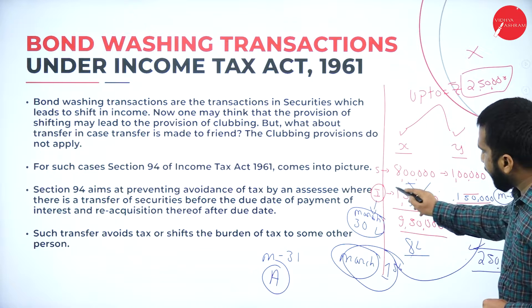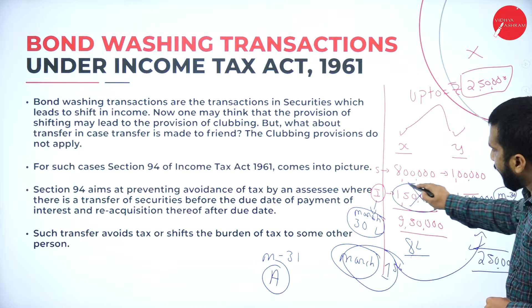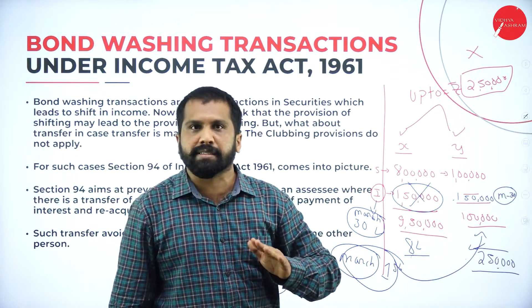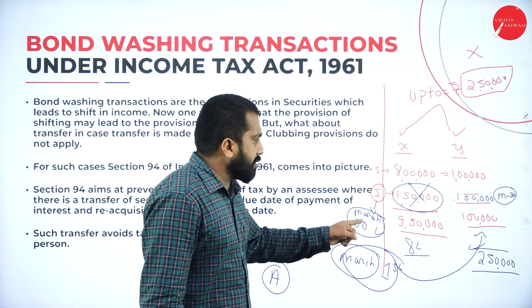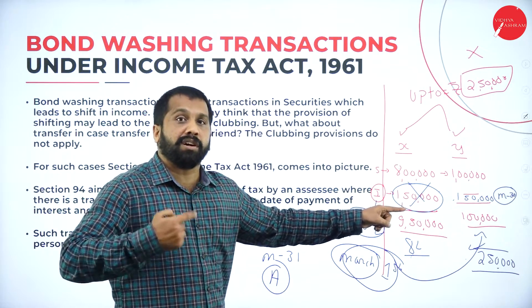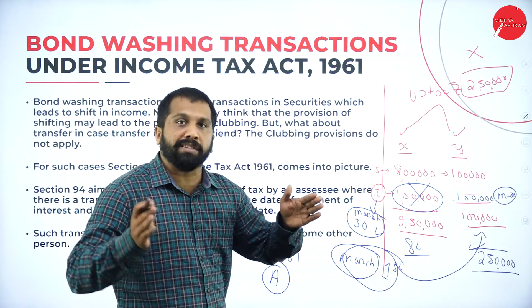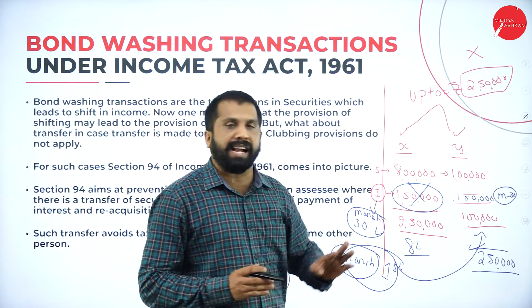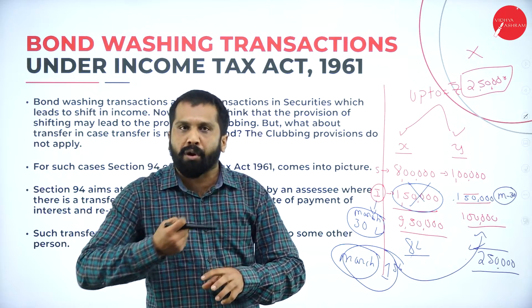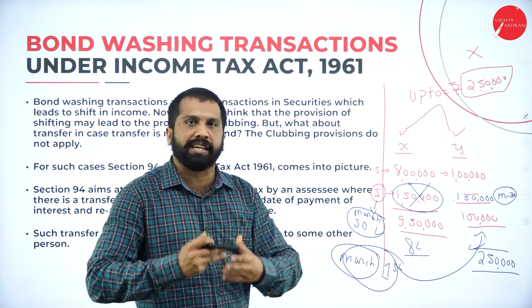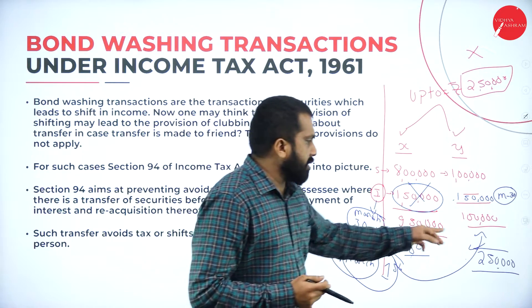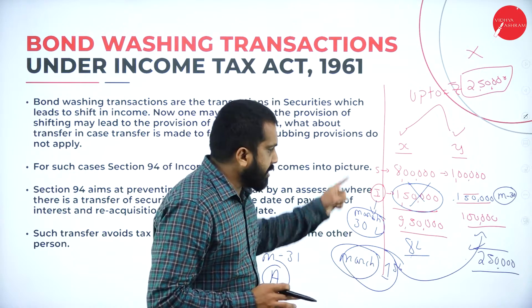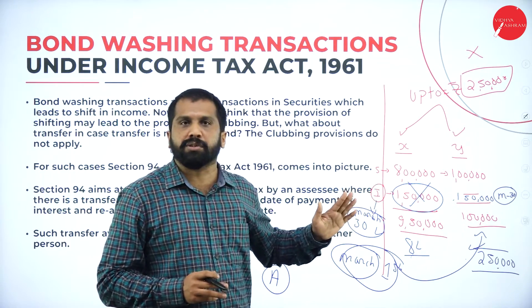He saved tax on 1 lakh 50 — these are called tax avoidance. You cannot transfer to your wife, your dad, or your mom. Why? Because of clubbing of income — you would have to pay tax on that anyway. That's why you called your friend, who is an outsider, so that you can save the tax.